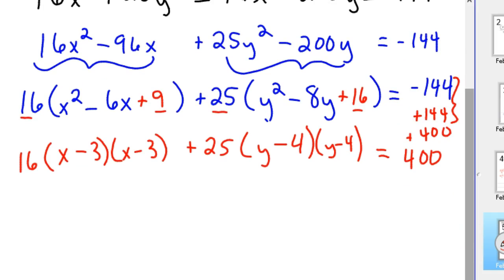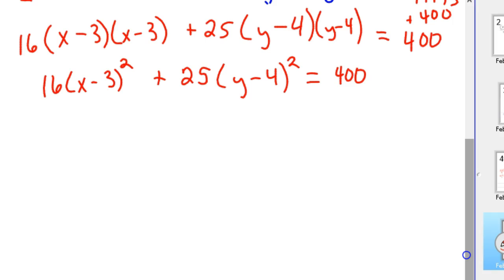Then your next step is we've got 16(x-3)² and you can see this thing shaping up. 25(y-4)² and that equals 400. So your last step to put this in standard form is this has to be 1. So you divide everything by 400.